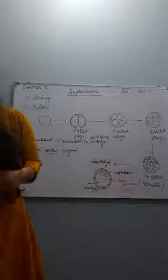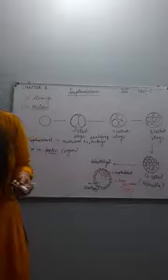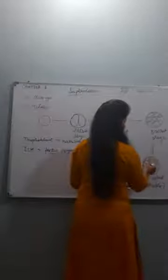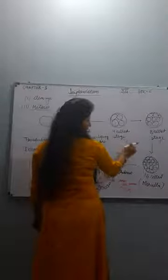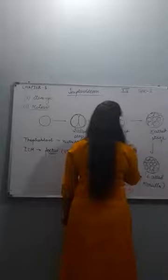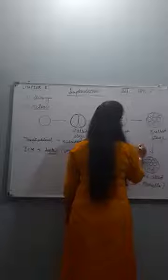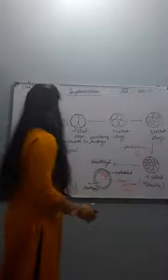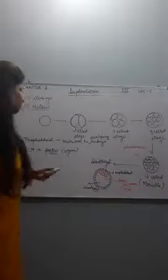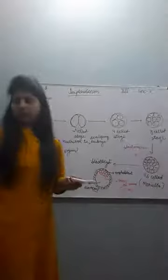One more important thing: all these cells — the two cells, four cells, eight cells, sixteen cells — these cells are known as blastomeres. That is about the embryonic development and implantation.